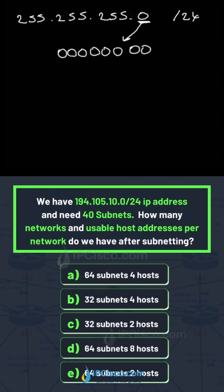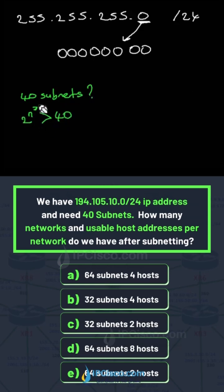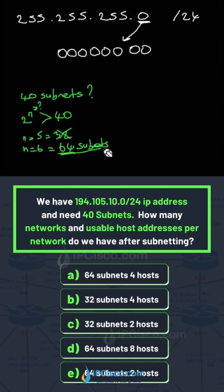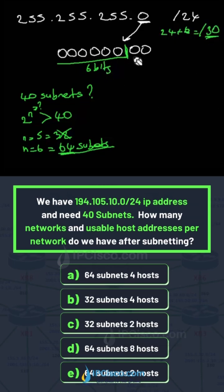For 40 subnets, what do we need? 2 to the power of n must be bigger than 40, and here n is 6. So 2 to the power of 6 is 64 subnets — these are our network bits. When we add these 6 network bits to the existing 24, we get the new CIDR value of /30.